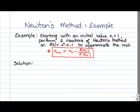In this video, we're going to look at an example of using Newton's method to help us find the root of a function. In this particular example, we're starting with an initial value x₁ = 1, and the function that we're working with is f(x) = x³ - x - 1. You're asked to perform two iterations of Newton's method to approximate the root.